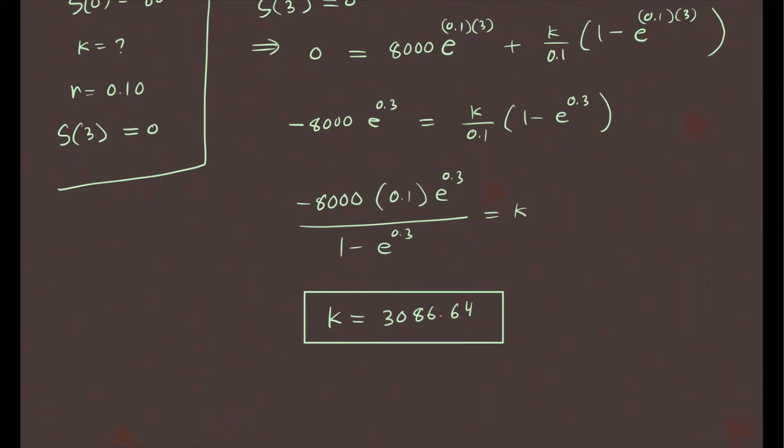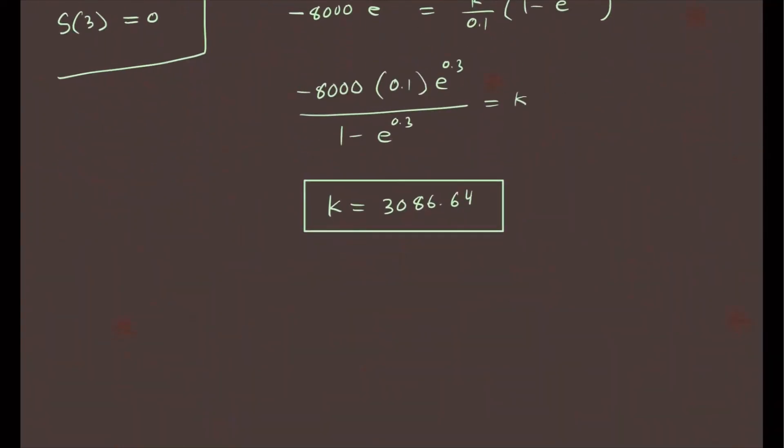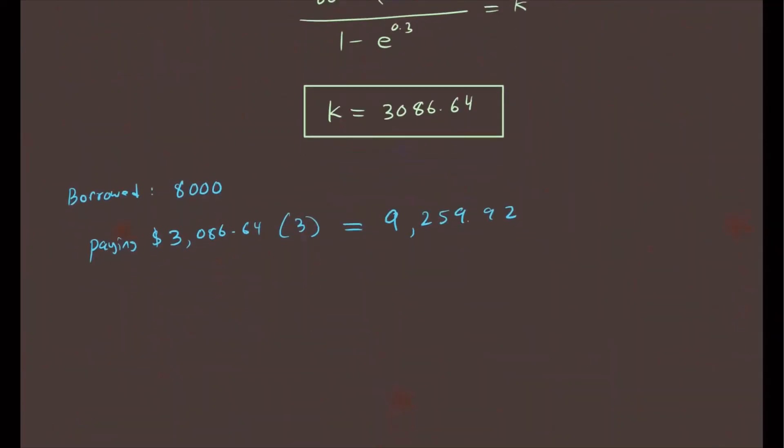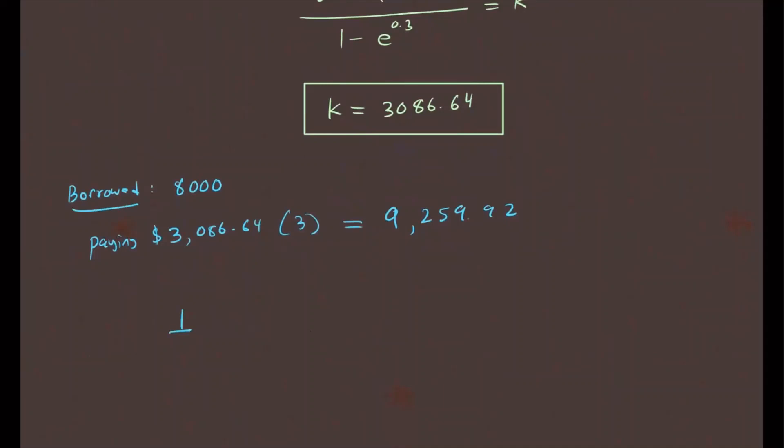And for the second part, we want to know how much was interest. So we know that we borrowed $8,000 and then you're paying $3,086.64 for three years. So this times three is going to give you about $9,259.92. So how much was paid on interest?